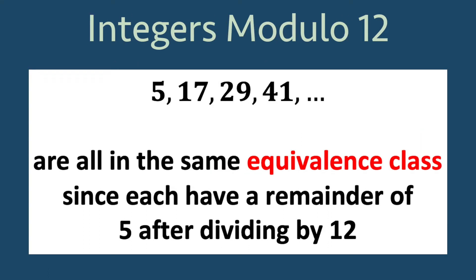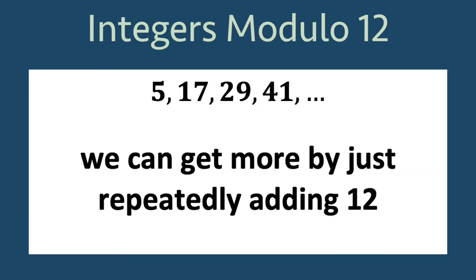Considering all integers modulo 12, we can name more integers in the same equivalence class as 5 and 17 by just continually adding 12: 5, 17, 29, 41, etc.